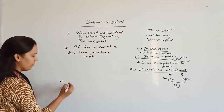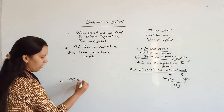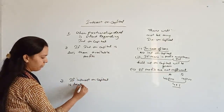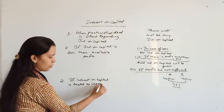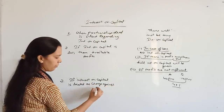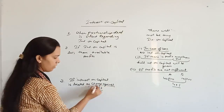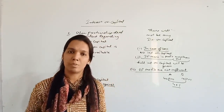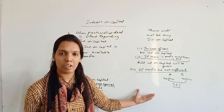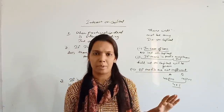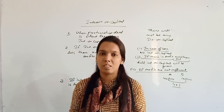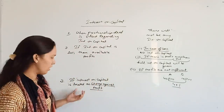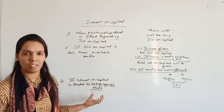The third main condition is if interest on capital is treated as a charge against profit. This is the most important point. Charge against profit means you have to pay whether there is profit or loss. In this condition, we will pay full interest on capital regardless of how much profit the firm has made.